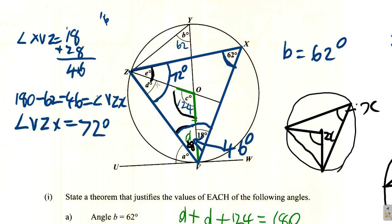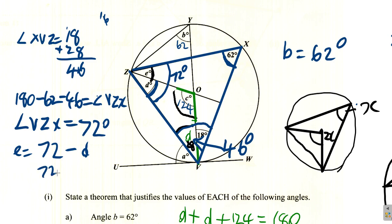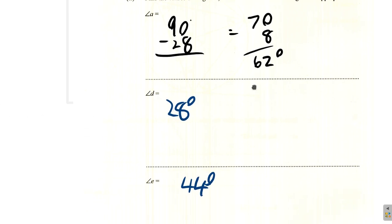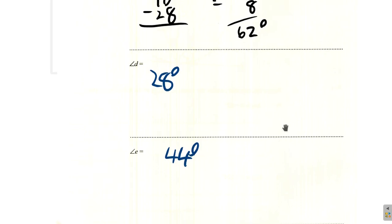We want angle E, which is part of angle VZX. We take off D: E equals 72 minus 28, which equals 44 degrees. So E is 44 degrees. That covers question 9A — we'll continue looking at question 9 in the next video.